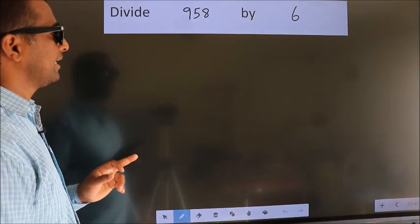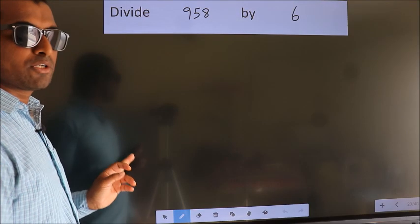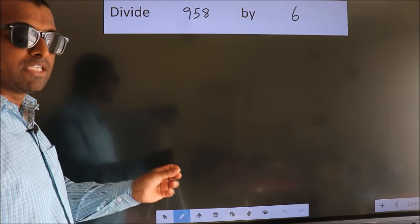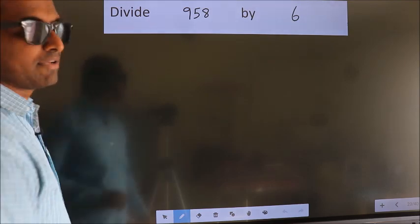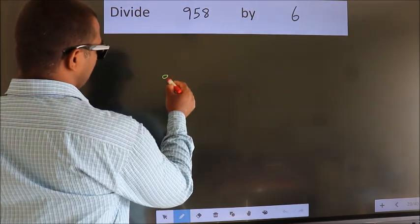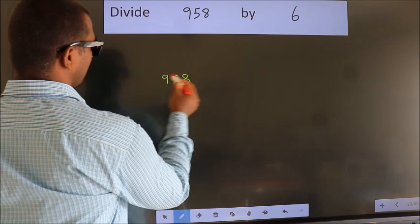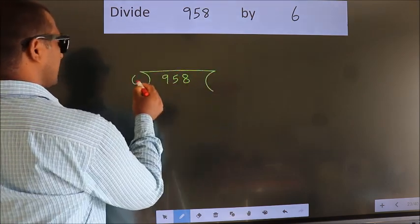Divide 958 by 6. To do this division, we should frame it in this way. 958 here, 6 here.